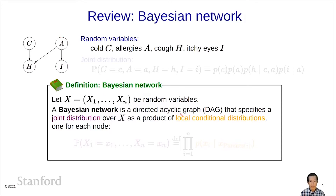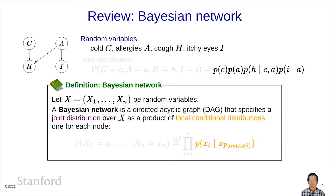Quantitatively, the Bayesian network specifies a set of local conditional distributions of each variable xi given its parents. In this example, that would be: probability of c, times probability of a, times probability of h given c and a, times probability of i given a. When we multiply all of these together, we get, by definition, the joint probability distribution over all the random variables.